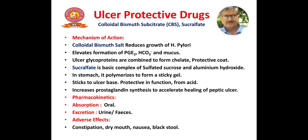Next are ulcer protective drugs. Colloidal bismuth subcitrate (CBS) inhibits H. pylori growth and elevates the formation of prostaglandin E2, bicarbonate, and mucus. Colloidal bismuth subcitrate combines with ulcer glycoproteins to form a protective coat. Sucralfate is a basic complex of sulphated sucrose and aluminium hydroxide. In the stomach it polymerizes to form a sticky gel that protects the ulcer from acid, allowing natural healing without disturbance. It also increases prostaglandin synthesis. Excreted in urine or feces. Adverse effects include constipation, dry mouth, nausea, and black stool.